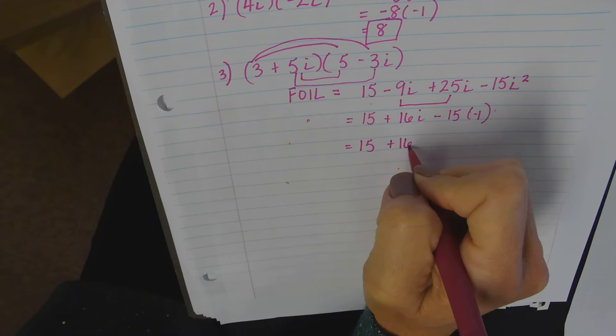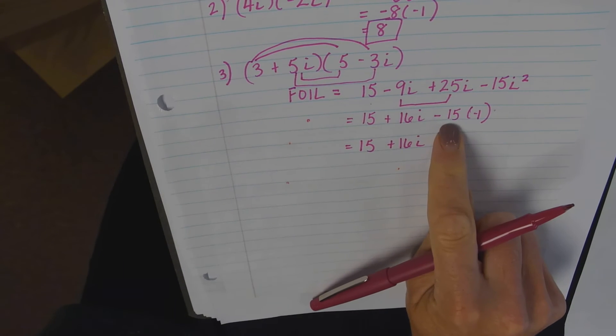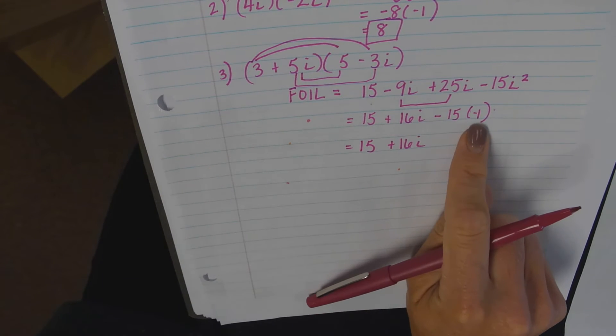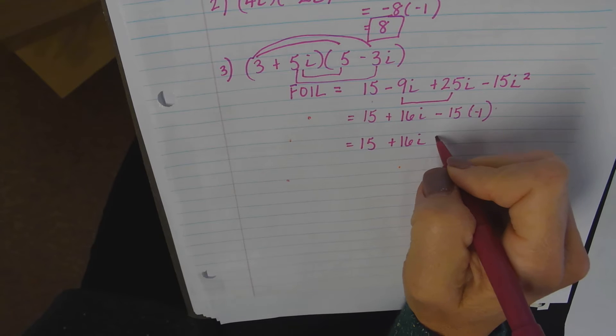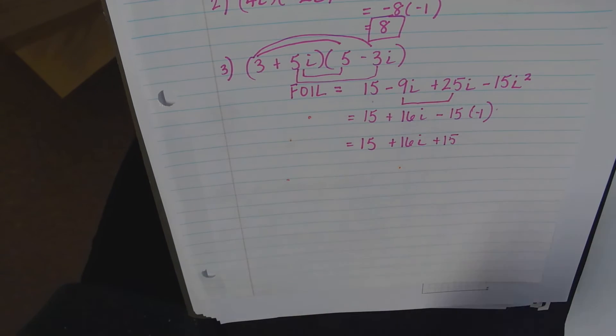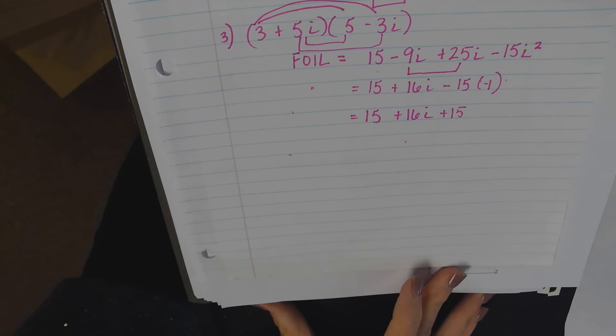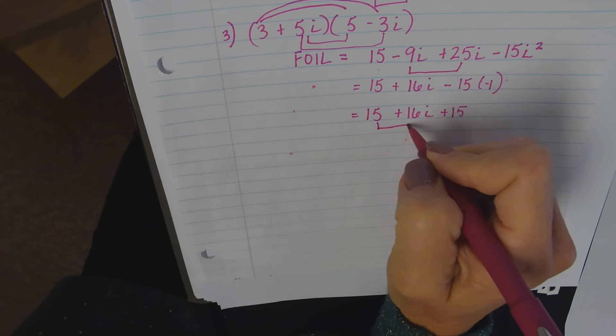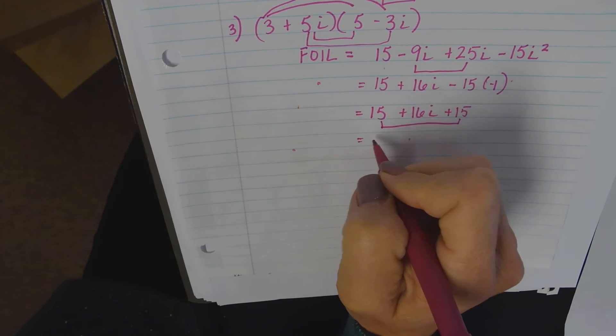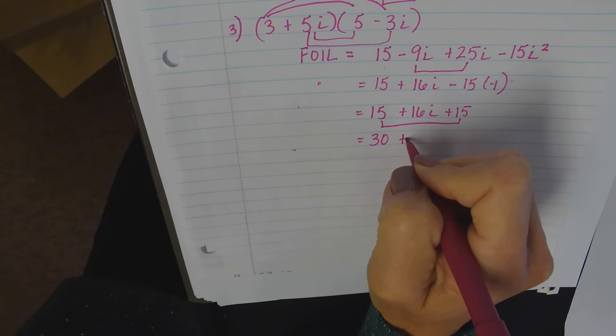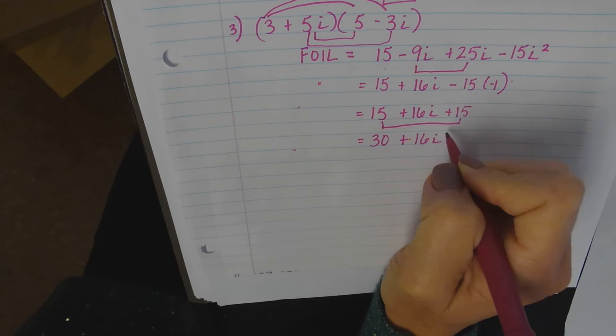15 plus 16i. Negative 15 times negative one is positive 15. Still not done. What do I need to do now? Combine. Which are 15 and 15.